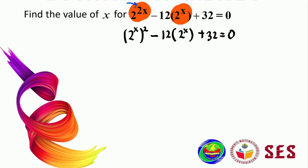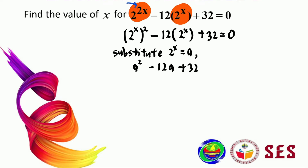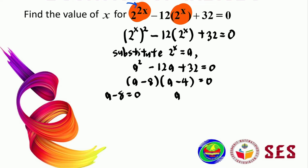You might think this doesn't look any easier, but if we substitute 2 to the power of x equals to a, then the equation becomes a squared minus 12a plus 32 equals to 0. This is just a quadratic equation. To solve it, we factorize to get a minus 8 times a minus 4 equals to 0. So a minus 8 equals to 0 and a minus 4 equals to 0, giving a equals to 8 and a equals to 4. But we don't want to find a — we want to find x, so we substitute back.